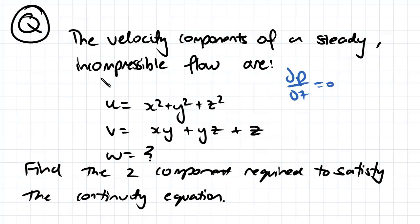An incompressible flow means we can neglect the density term ρ because the density isn't going to change from point to point. We have constant density throughout our flow.